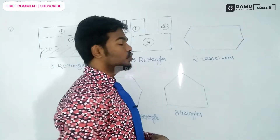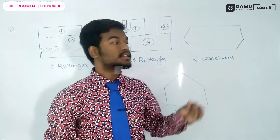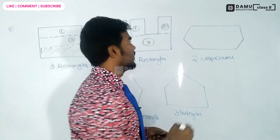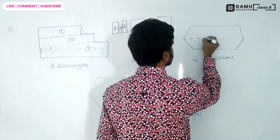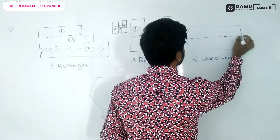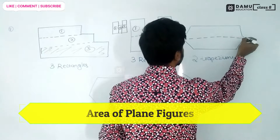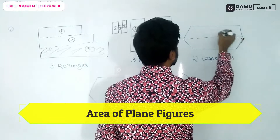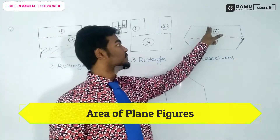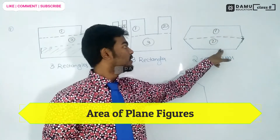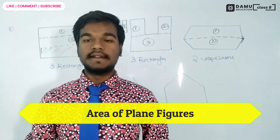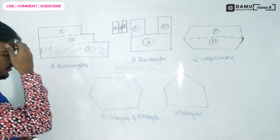Next, two trapeziums. For two trapeziums, the opposite sides should be parallel to each other. You can join like this — here one and two, two trapeziums. The upside and this one are parallel, and the down side is also parallel to each other — opposite sides are parallel.